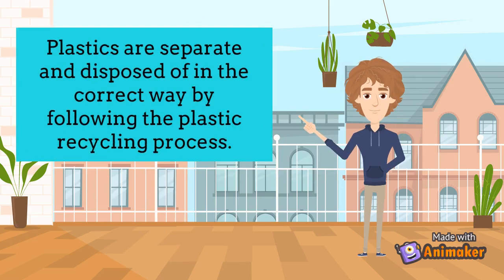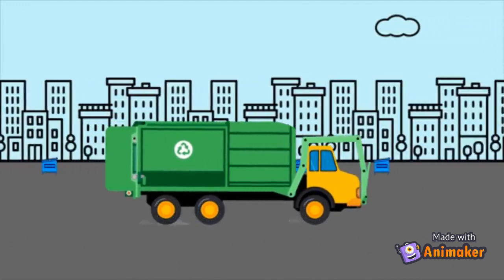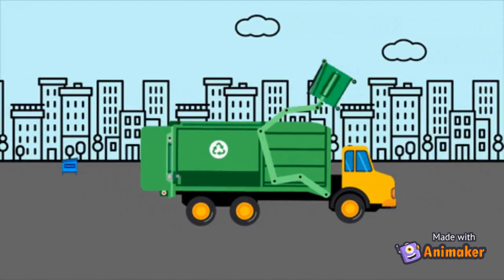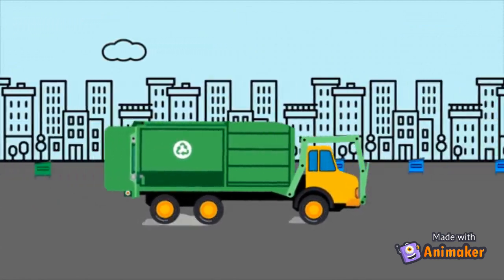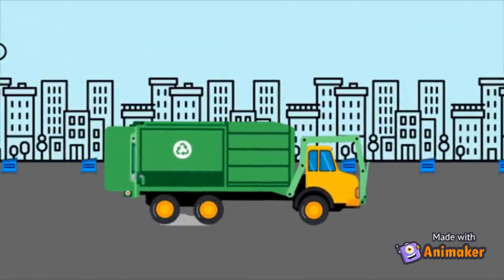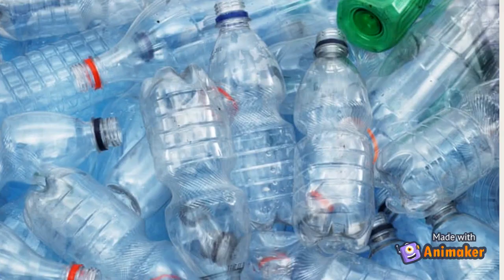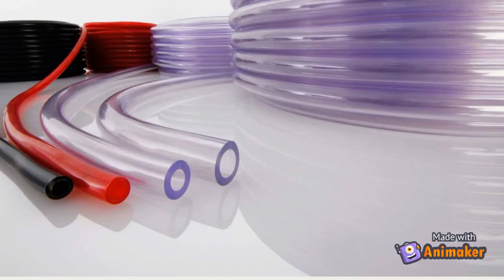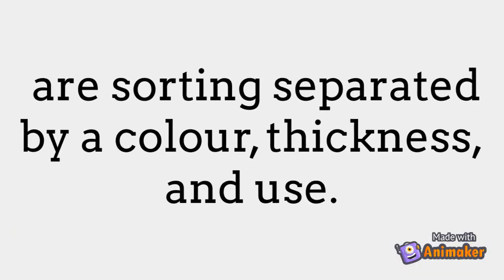How to recycle: plastics are separated and disposed of in the correct way by following the plastic recycling process. First of all, the company will collect post-consumer materials from homes and institutions. Then, taking the plastics to communal collection recycling bins. Plastics such as bottles, tubes, and trays are sorted and separated by color, thickness, and type.